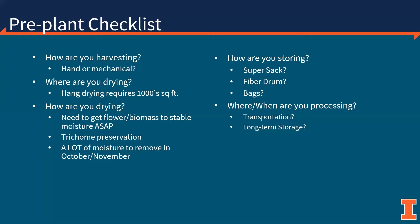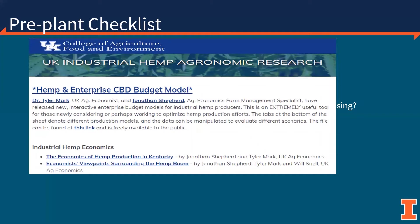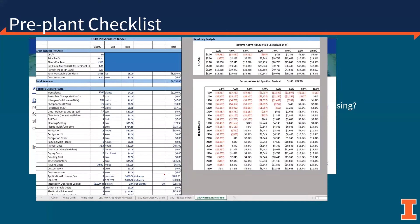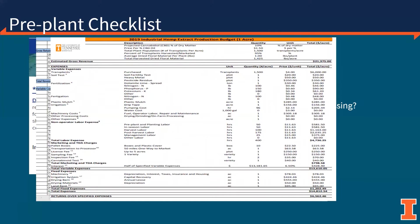The University of Kentucky has put together a great hemp enterprise budget available on their website, along with a ton of other good materials. The University of Kentucky has been ahead of the game in hemp production research and is a great resource. This budget is easily manipulated to fit your needs for any production system, and you're able to input market and input costs to accurately reflect your production system and potentially profitability. In addition, the University of Tennessee at Knoxville has put together a similar budget, and combining these two budgets will give you a good idea of the input costs required to grow industrial hemp.